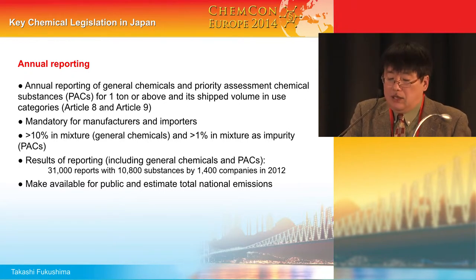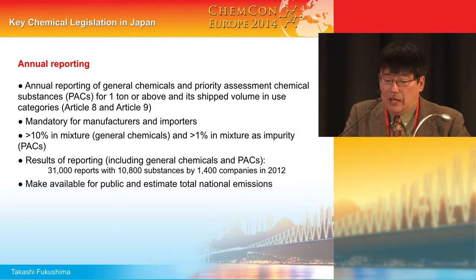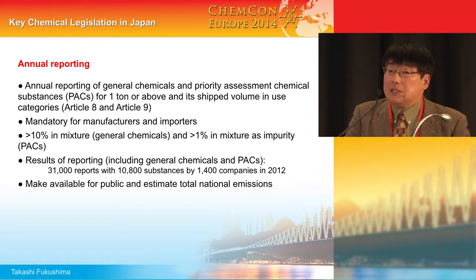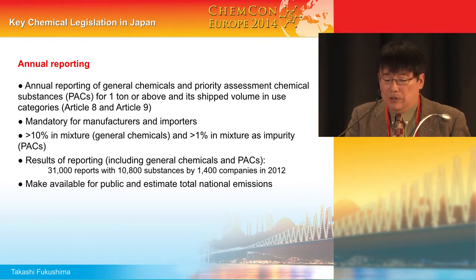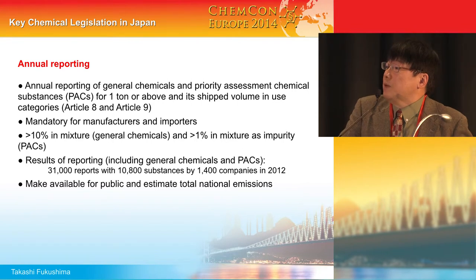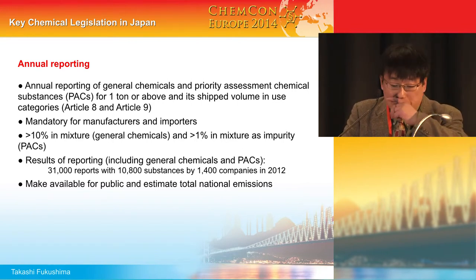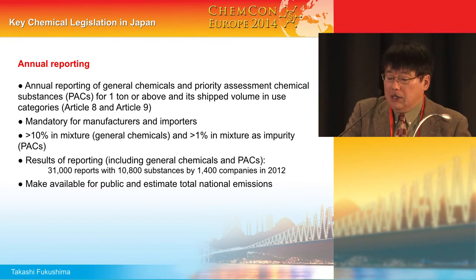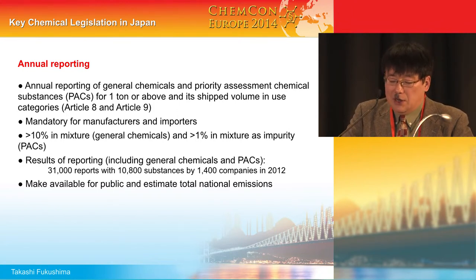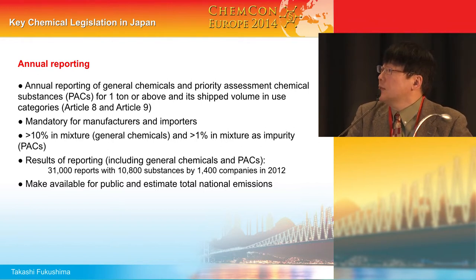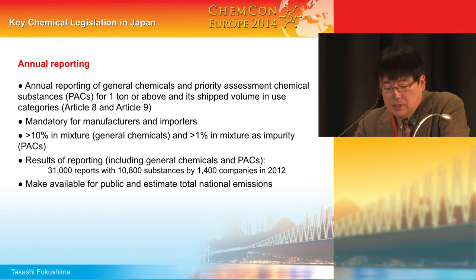Under the CSCL comprehensive assessment, we request you to provide manufacture and import amounts, as well as information on usage. The threshold is 10% in mixtures for general chemicals and 1% in mixtures as an impurity for priority assessment chemicals. As a result of reporting, we receive around 30,000 reports every year. If you are interested in the Japanese market, you have to be aware of this.